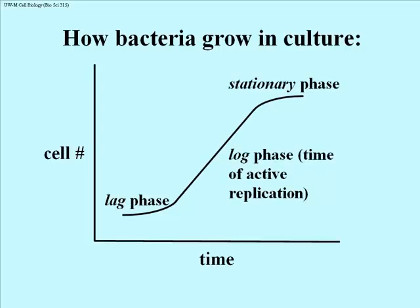In bacteria, we refer to the period when doubling seems fairly infrequent as the lag phase. It is followed by a period when the cells double very frequently, called the log phase — the time of active replication. When a culture becomes filled with bacterial cells, there is apparently a signal that tells them their density is high enough, and the cells will stop dividing rapidly and go into the stationary phase.